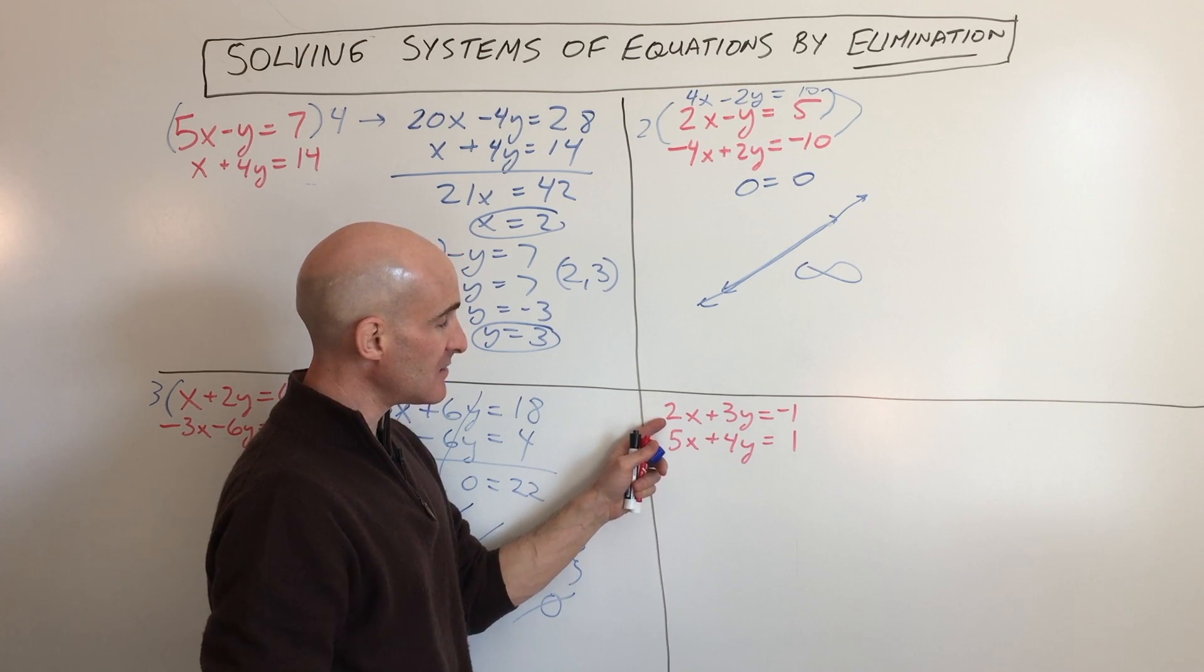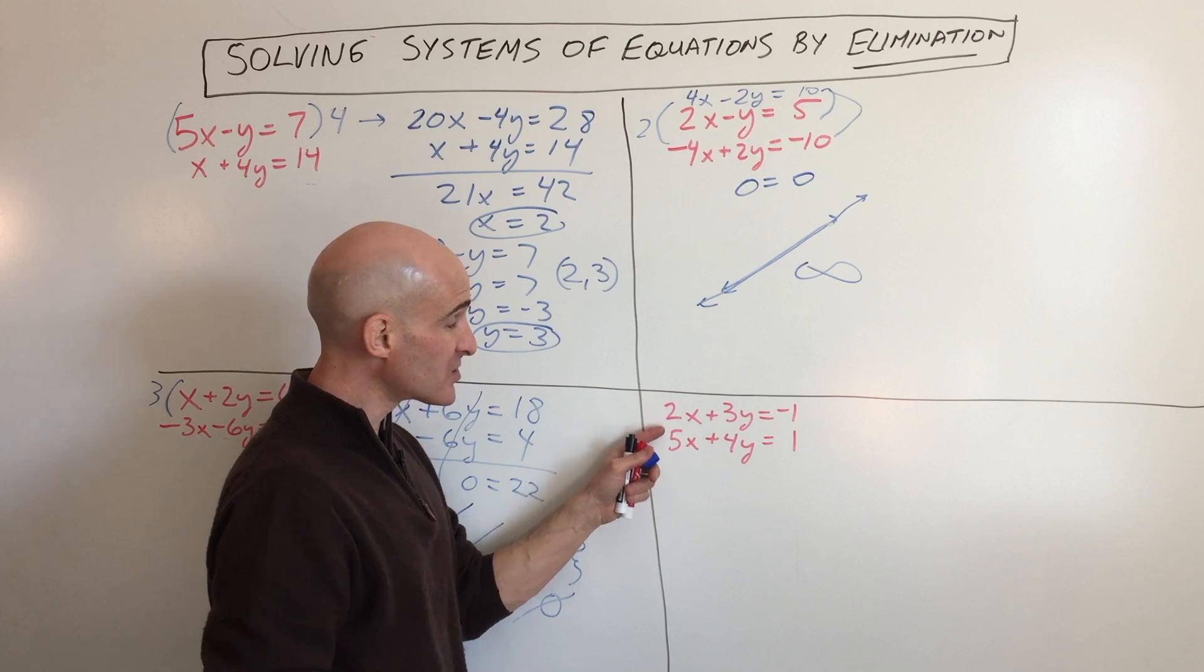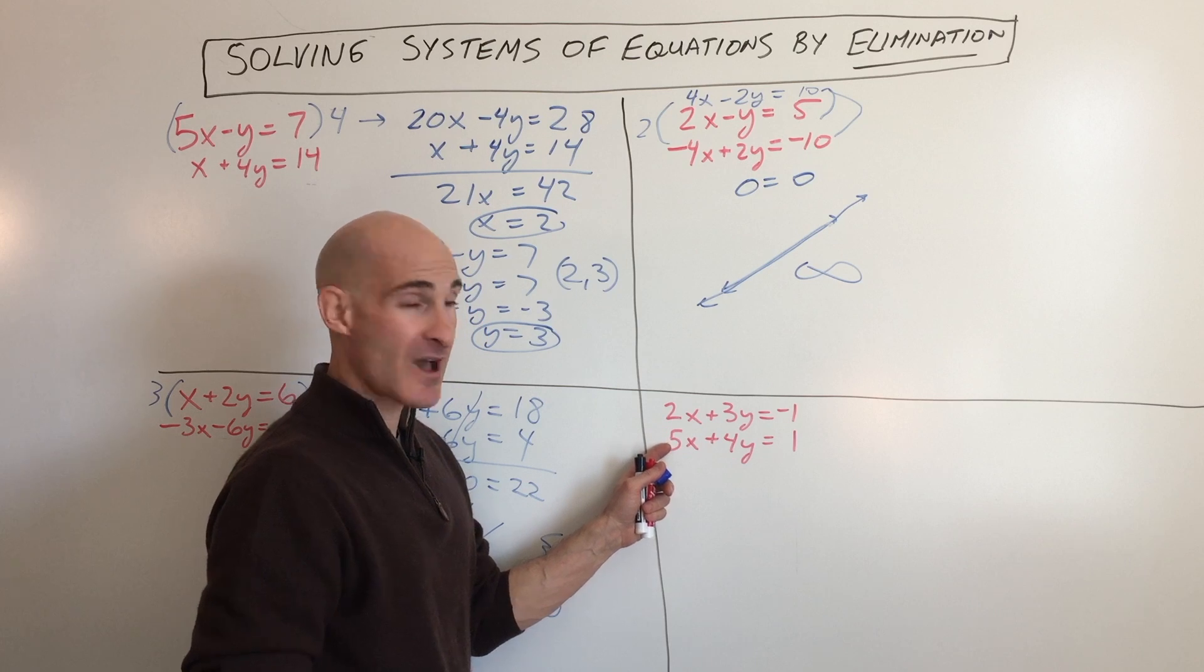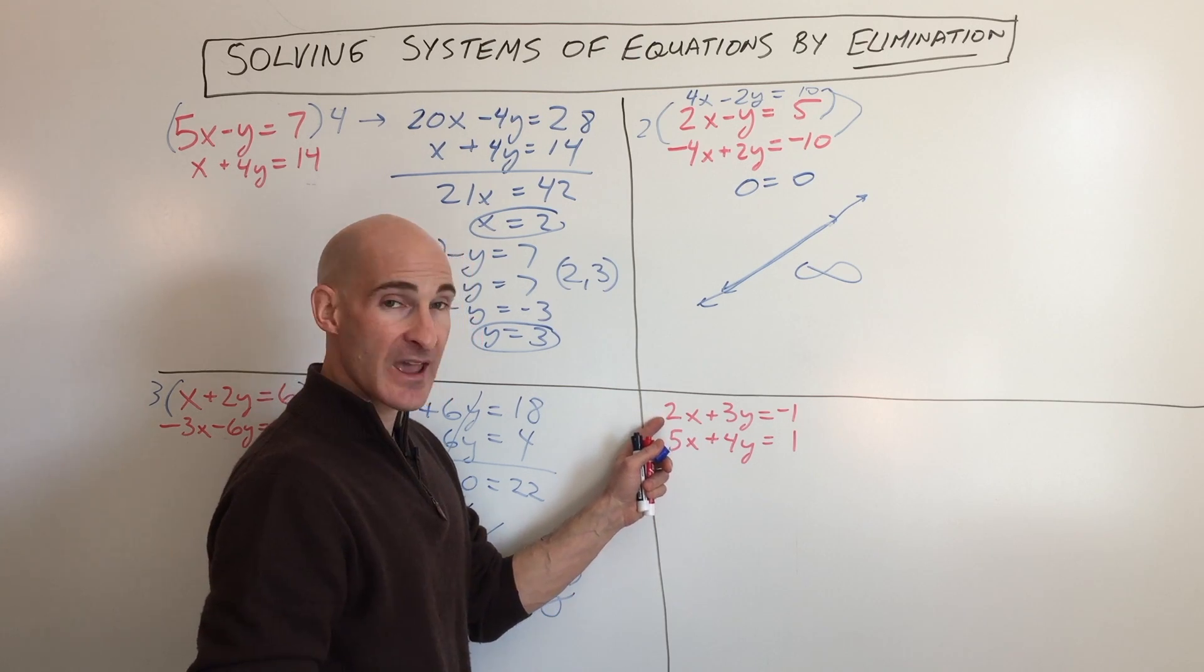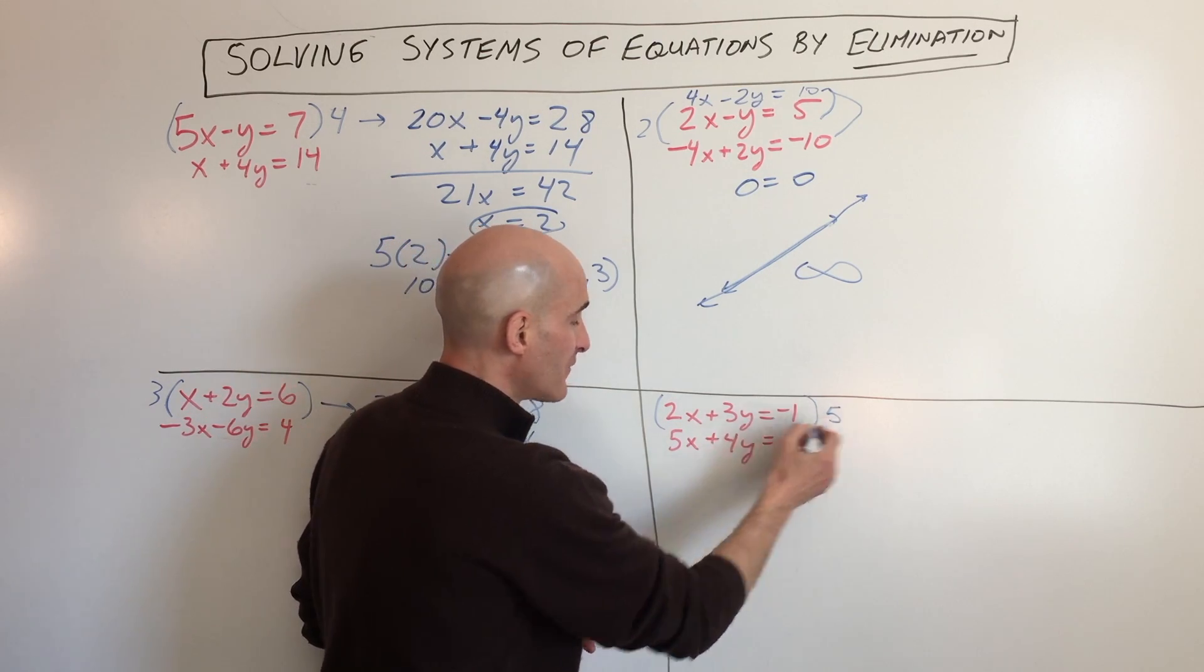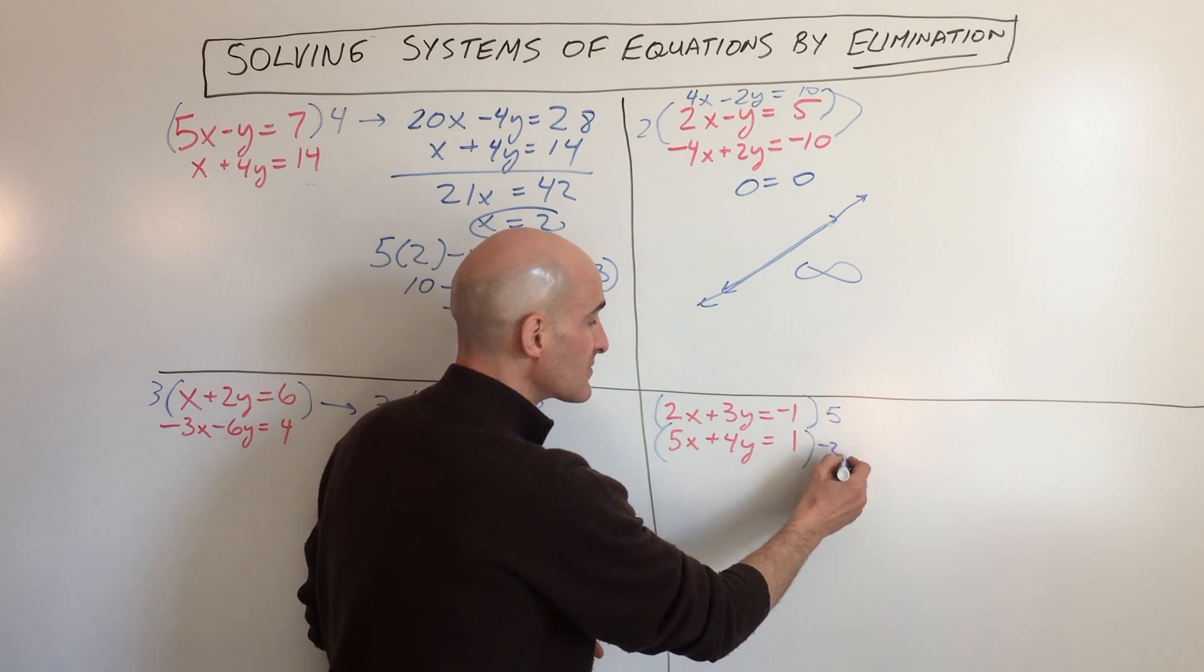So let's just say we want to eliminate the x's. What does 2 and what does 5, what do they both go into evenly? 10, that's the lowest common multiple. But let's make one of them negative 10 and one positive 10. So we're going to multiply this top equation times 5, the bottom equation times negative 2.